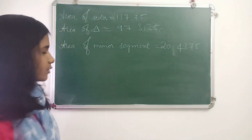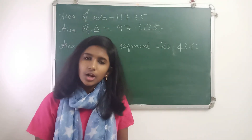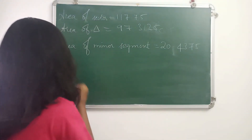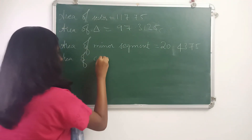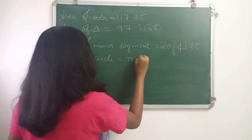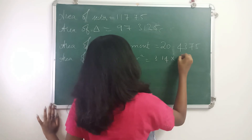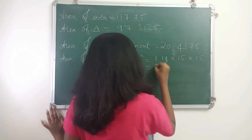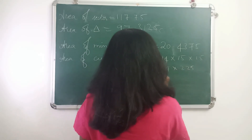Now we have to find the area of the circle to determine the area of the major segment. Area of circle is pi r squared, so 3.14 into 15 into 15, which is 3.14 into 225.